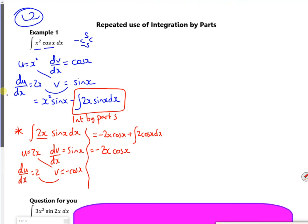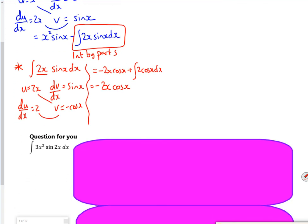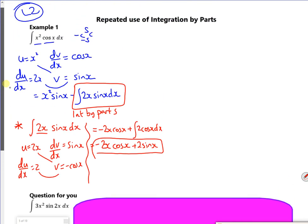And then if you look, if I integrate cos, it goes back to sin. So that'll be plus 2 sin x. So this bit here goes back in to that other part up there.